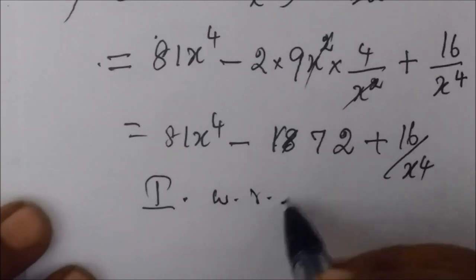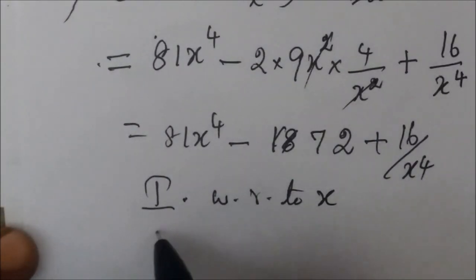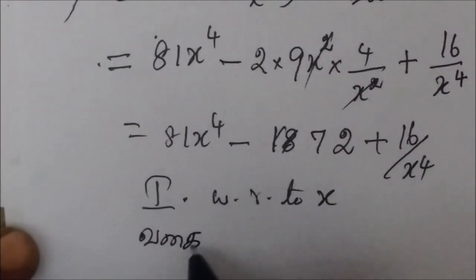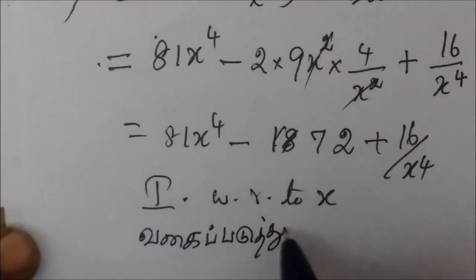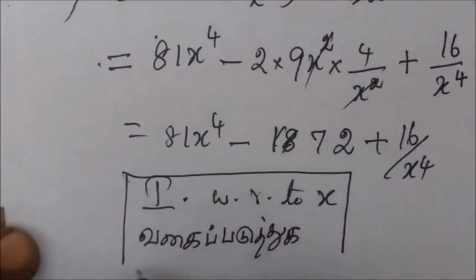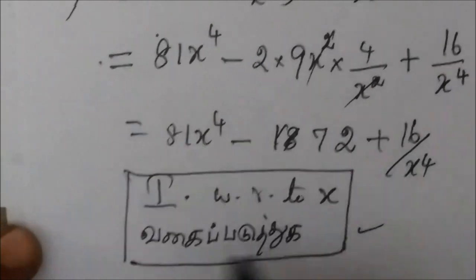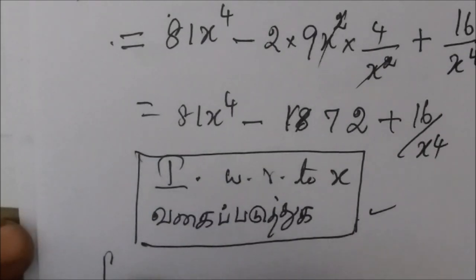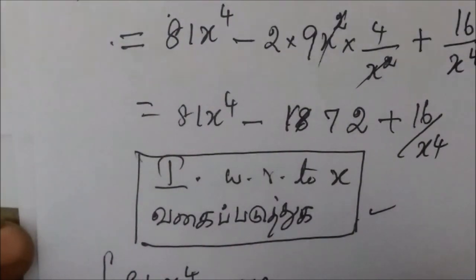Now we integrate with respect to x. We will do the integral of 81x to the power 4 minus 72 plus 16x to the power minus 4, dx.